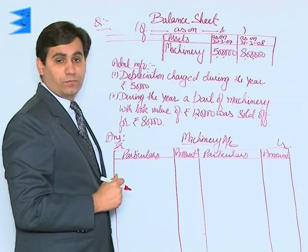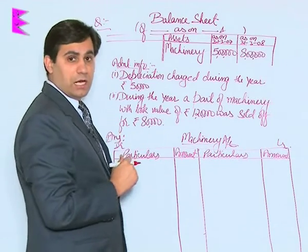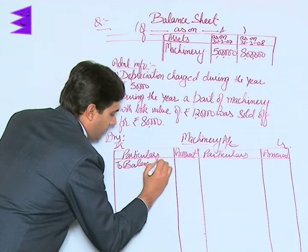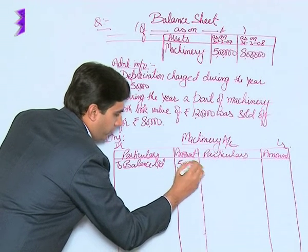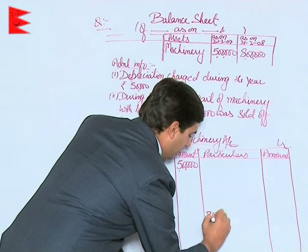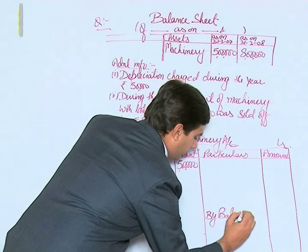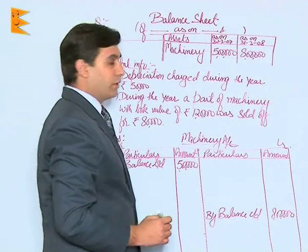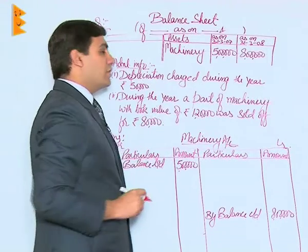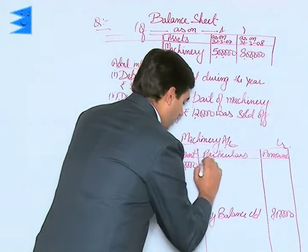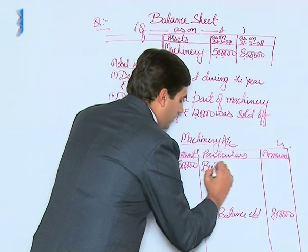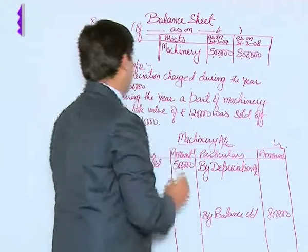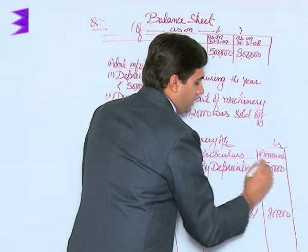Using all this information we will now prepare the machinery account. Remember, the opening balance brought down is rupees 5 lakh and the balance carried down is rupees 8 lakh. The depreciation charged during the year was rupees 50,000, so by depreciation, this amount comes to rupees 50,000, which is in fact given to us directly in the additional information.